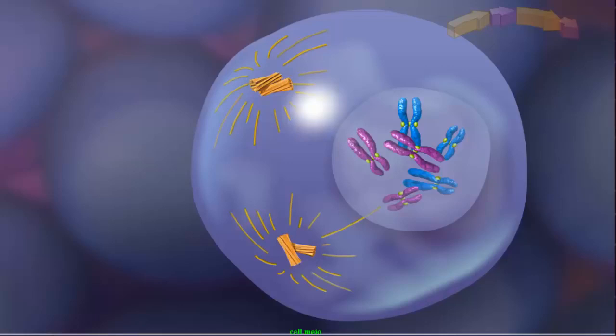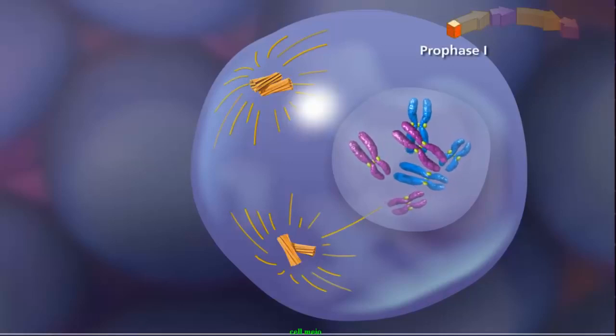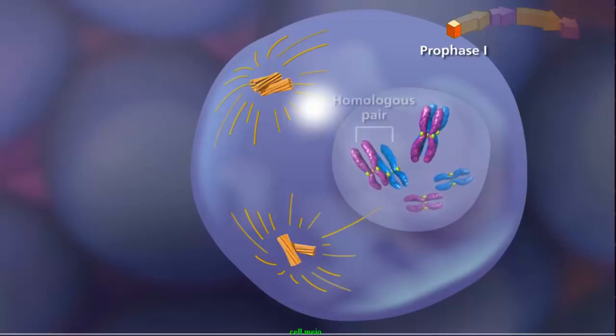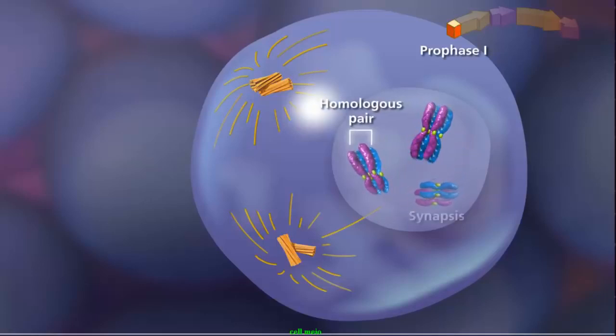The first event occurs during prophase I, when homologous pairs of sister chromatids lie side by side in a process called synapsis, forming a tetrad or bivalent. The homologous chromosomes share similar, but not necessarily identical, genes.